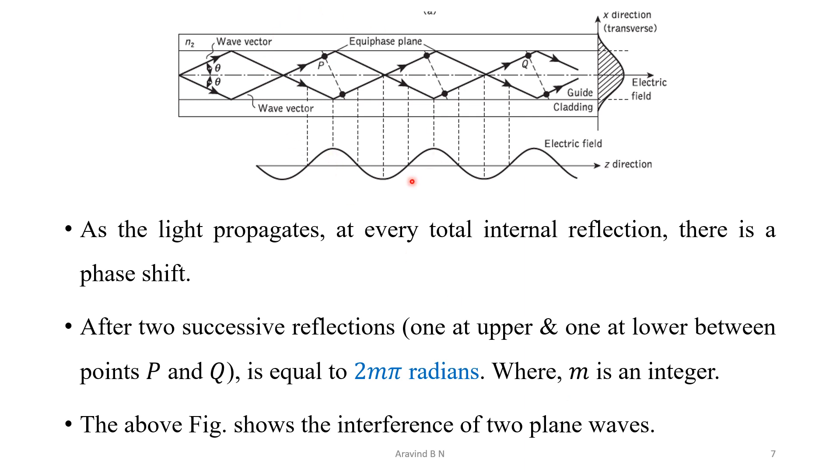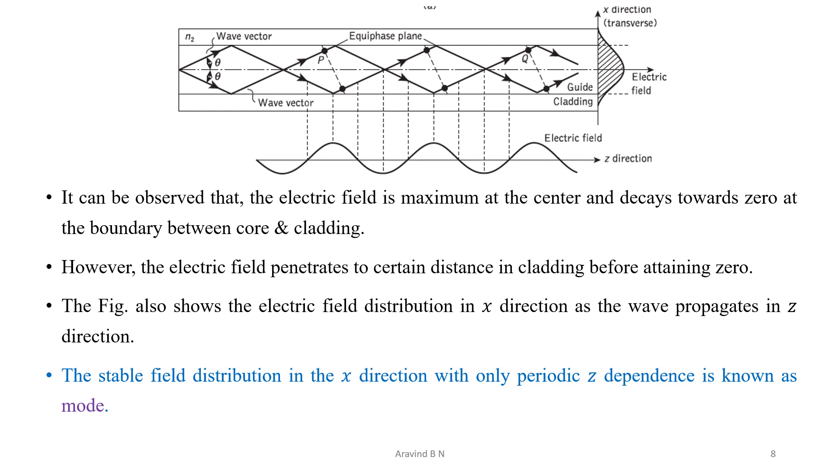Now, consider this particular diagram, which is going to show the interference of two plane waves. Now, with respect to this diagram, we can observe the traveling of two waves as well as the corresponding electric field, both in z direction as well as in the x direction.